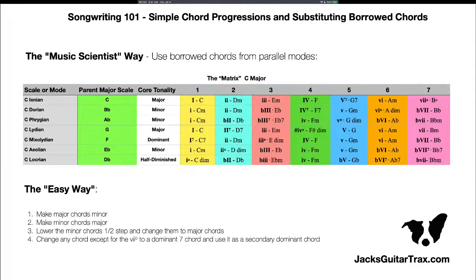If you don't understand what modes are, don't worry about it for right now — they're just scales. These are all related to C and are all parallel, meaning they all start on the same root: C Ionian, C Dorian, C Phrygian, C Lydian, C Mixolydian, C Aeolian, C Locrian. I've built a table where you can see that the one chord in Ionian is major, in Lydian it's major, in Mixolydian the triad is major but it's actually a dominant seven chord. The uppercase Roman numerals are major chords, lowercase are minor, and the little circle means diminished.